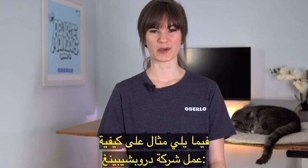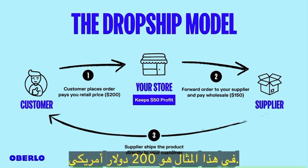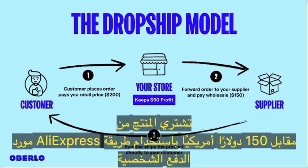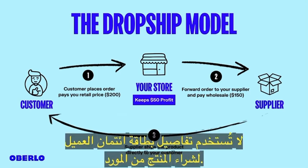Here's an example of how a dropshipping business works. Step 1: Your customer purchases the product from your online store for the price you set — in this example, $200 USD. Step 2: You purchase the product from the AliExpress supplier for $150 USD using your personal payment method, like a credit card. Your customer's credit card details are not used to buy the product from the supplier.